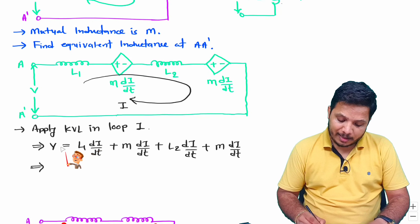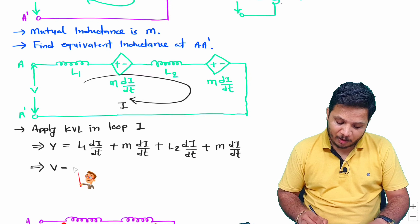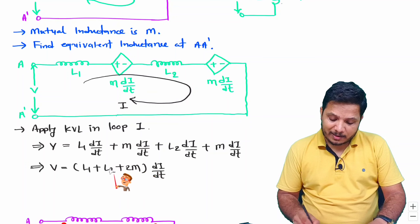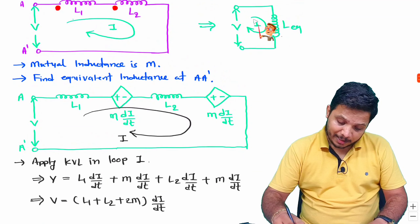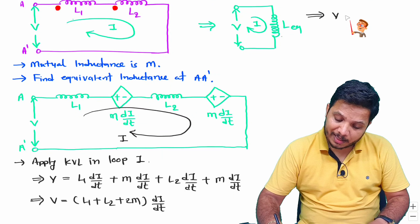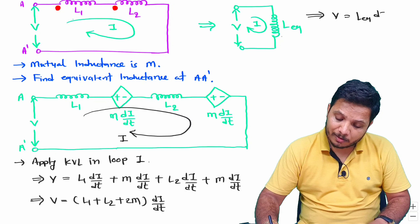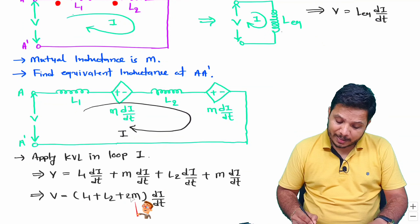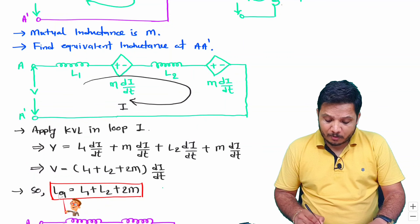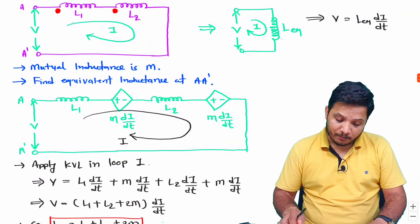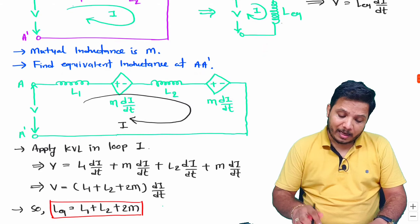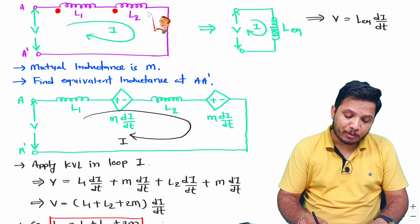In this equation di/dt is common, so taking it common: V = (L1 + L2 + 2M)·(di/dt). Since V = L_equivalent·(di/dt) for the equivalent circuit, comparing both equations gives L_equivalent = L1 + L2 + 2M. This result applies for series connection of L1 and L2 with dot convention in the entering-entering case, and similarly for leaving-leaving polarity.